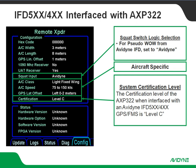Squat switch logic — we're going to set that for Avidyne, driven from the pseudo weight on wheels out of the IFD. If you're doing a 91.411 or 91.413 check and you need to put it into altitude mode, it's pretty hard to fake 35 knots GPS ground speed. So in that scenario, go in and change the squat switch input to ignore. When you do that, it'll let you reboot the IFD and manually go into altitude mode on your transponder. The big thing to be careful of is after the check, make sure you go back and set that back to Avidyne before you send the aircraft on its way — otherwise the transitions are not going to work the way the pilot expects.